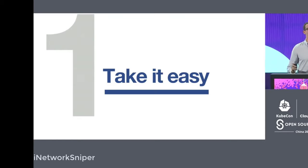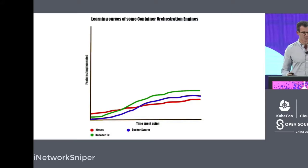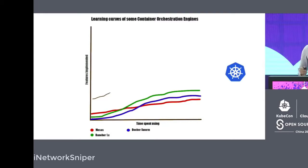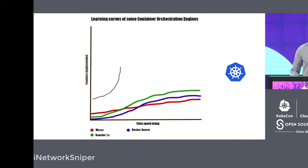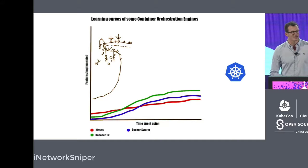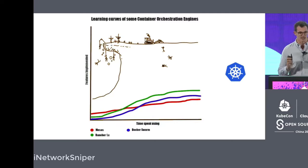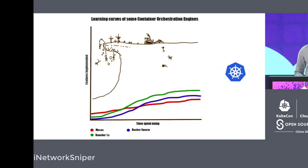So the first tip is take it easy. You might have used other orchestrators, but Kubernetes is just a little bit more complicated than all of them. As soon as you start deploying, you realize that things aren't so easy anymore. It's only when you move to persistent storage and networking that things get really complicated, and they don't stop there — network policies, pod disruption budgets. So take your time; you might not learn Kubernetes in three hours or a weekend.